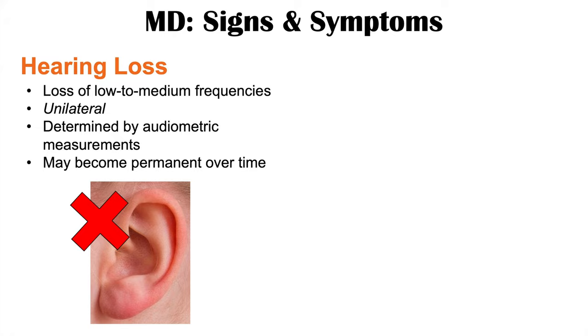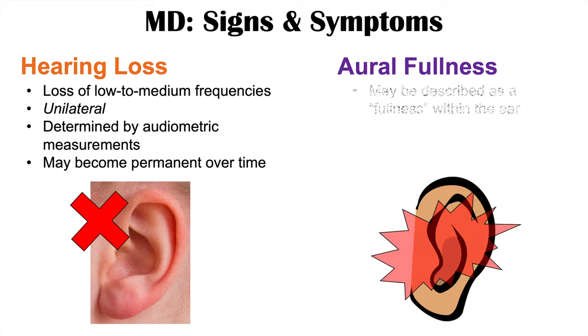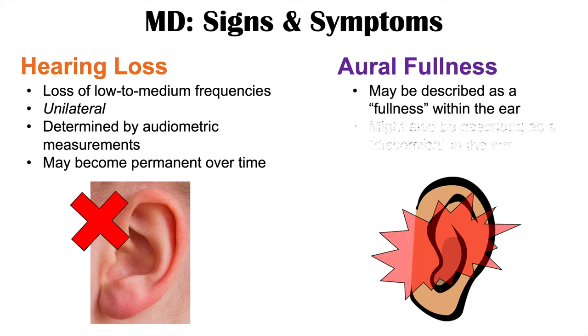Another important characteristic finding is aural fullness — a sensation that there is some fullness or pressure within the ear. It may also be described as a discomfort in the ear. So those are some of the classic findings in Meniere's disease.